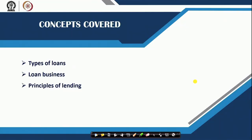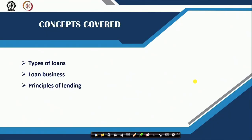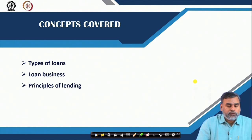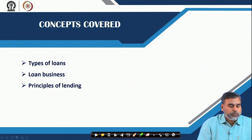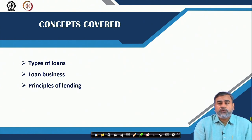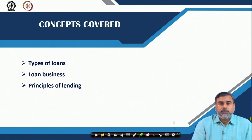In today's session, we will be covering three different issues. One is what are those different types of loans or lending activities commercial banks do. Number two is, whenever we talk about the loan business, what are those factors which affect the commercial banks' loan business. And third, we have to see what are those basic principles they always follow whenever loans are provided.